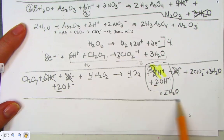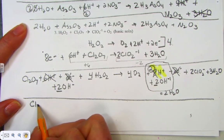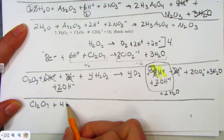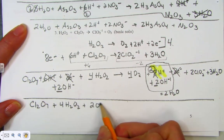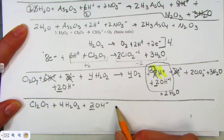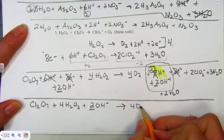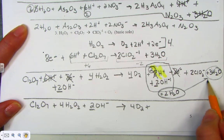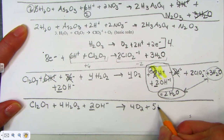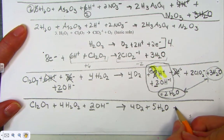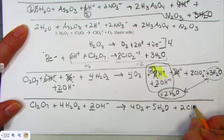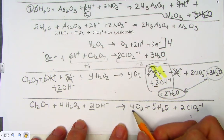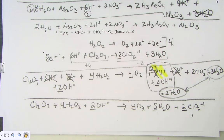Let's clean it up and write the final answer. Dichlorine heptoxide plus 4 hydrogen peroxide molecules plus 2 hydroxide ions forms 4 molecular oxygens plus waters — combining 2 from the neutralization and 3 remaining gives a total of 5 waters — plus 2 ClO₂⁻ chlorite polyatomic ions. There is our balanced equation in a basic solution.